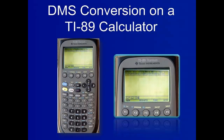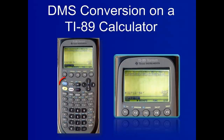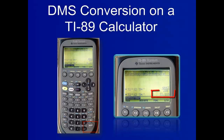Step 3, enter in the number for the seconds, which is 54 in this example. Then press second, then 1 to get the quotation symbol for the seconds. Press enter again to display the answer, which is 32.215 degrees.